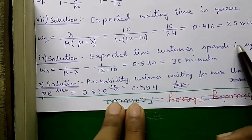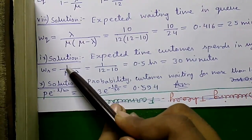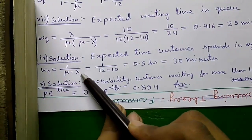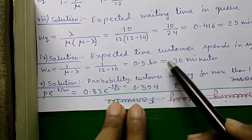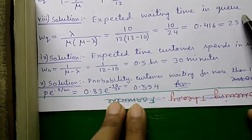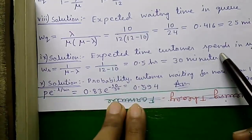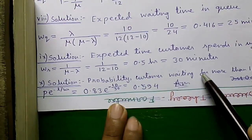Solution of nine: expected time a customer spends in system is given by Ws equals 1 divided by (mu minus lambda), that equals 1 divided by (12 minus 10) equals 0.5 hour or 30 minutes, overall out of which 25 minutes in queue and 5 minutes in service. And finally solution of 10: probability that a customer is waiting for more than 10 minutes.